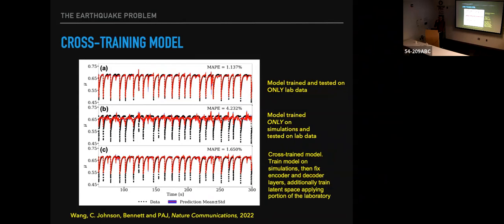Audience question about the intuition behind retraining the latent space: the goal is to make the model a more robust, powerful predictor of the current behavior of the actual fault we're interested in. We take the model trained on simulations and retrain the latent space with actual data from the system we want to predict — laboratory or Earth data — so we can capitalize on the information from the actual system to help us get there.